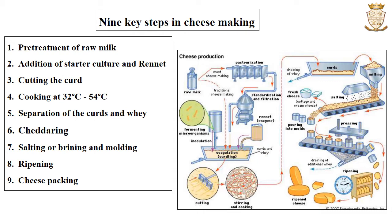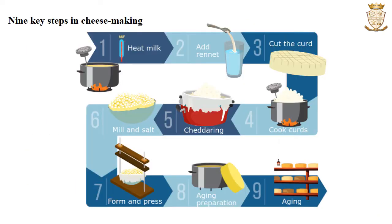Further steps include moulding and pressing the curd at low or relatively high pressure, also known as cheddaring; salting or brining and moulding of the cheese curd; ripening of the cheese at temperatures ranging from 6 to 24 degrees Celsius to allow the characteristic flavour and texture to develop; and finally, packing of the cheese. These nine key steps are shown in the accompanying image.